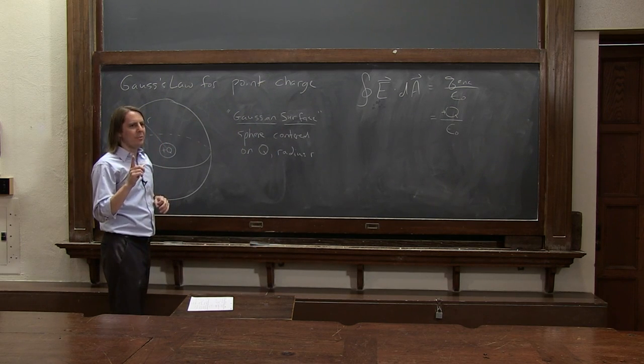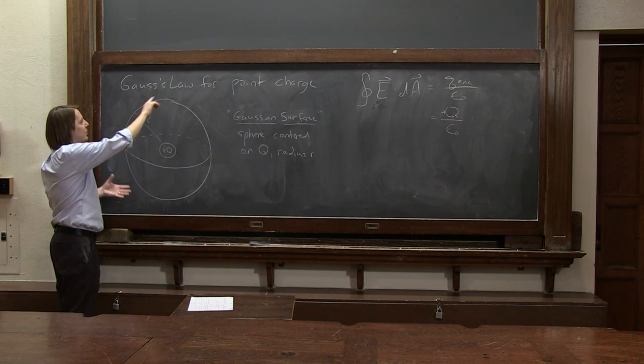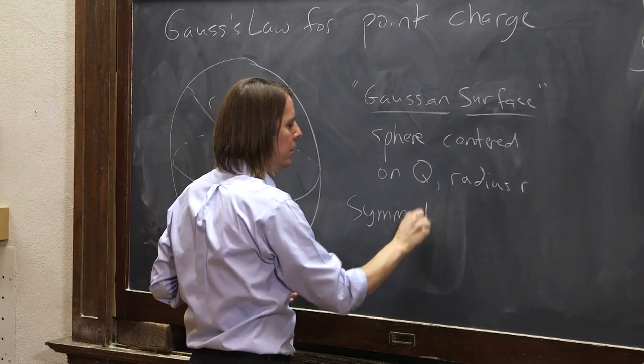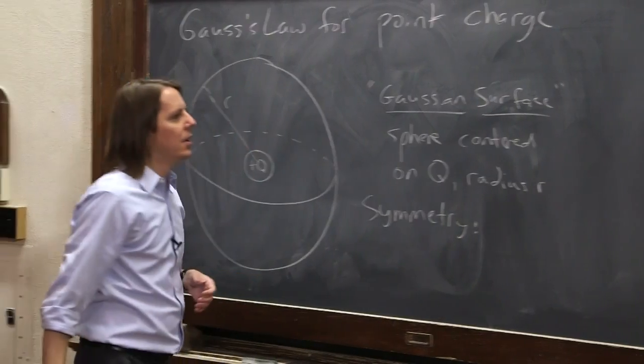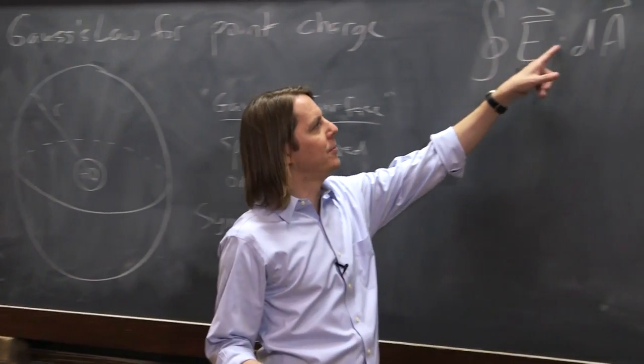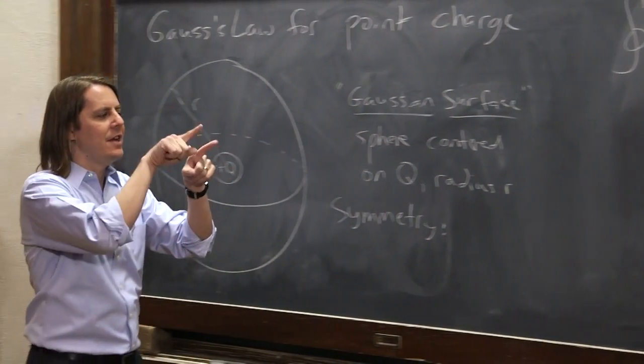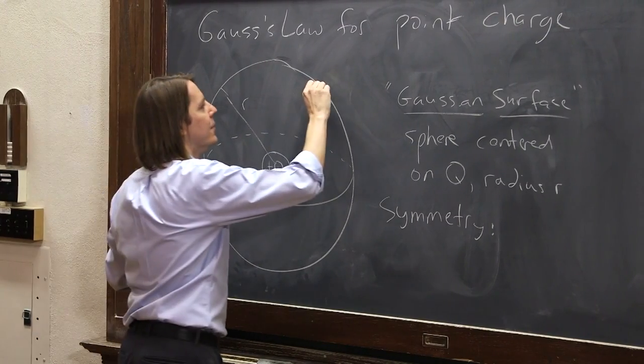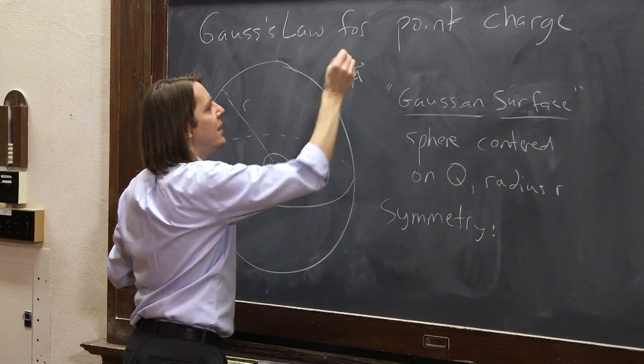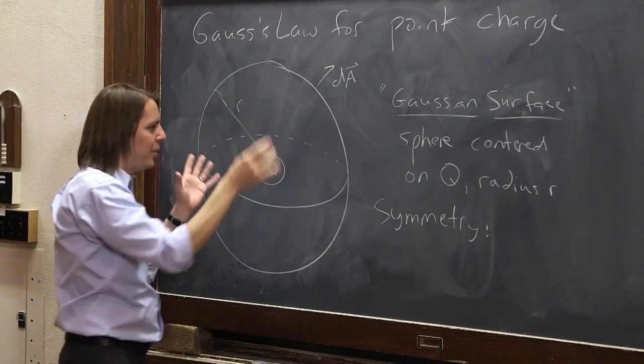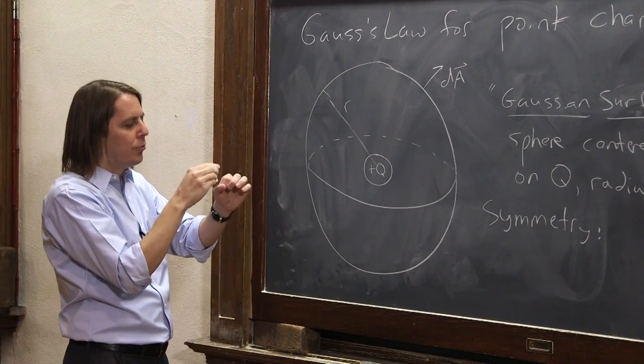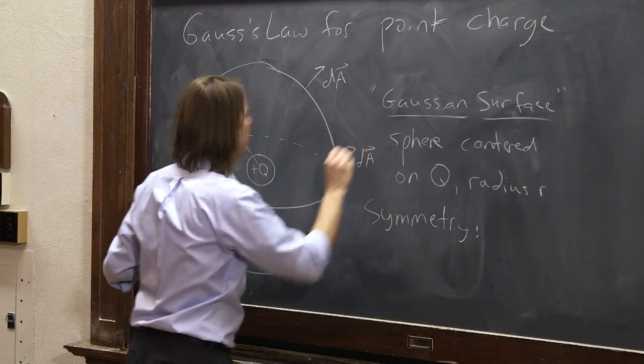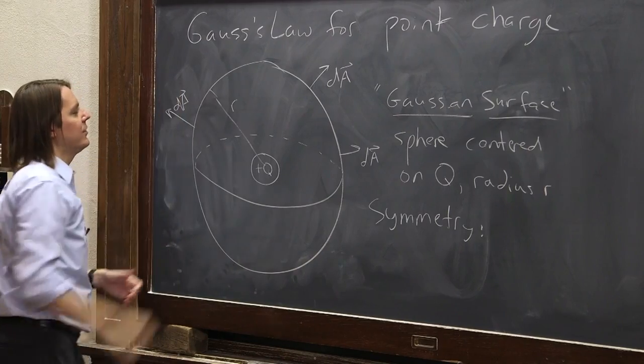But we also have to do the left side, the surface integral. We rely on symmetry. This surface was chosen because it matches a point charge's symmetry. Symmetry tells us two things. First, it helps with the dot product. Everywhere you go on a sphere, DA sticks out normal to the surface.